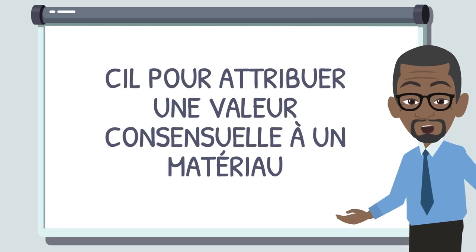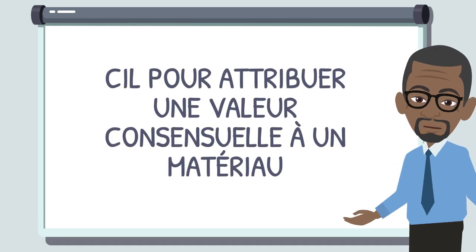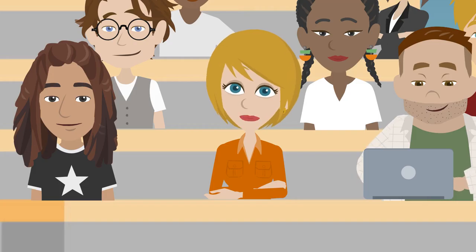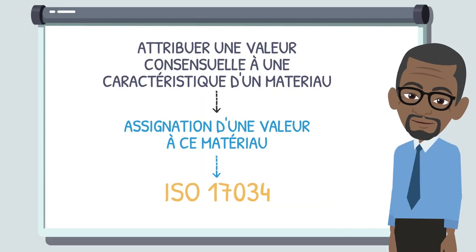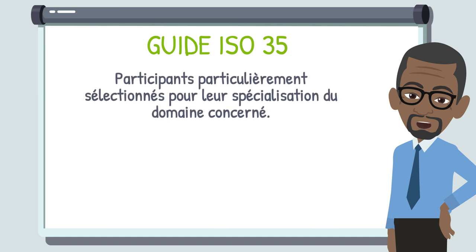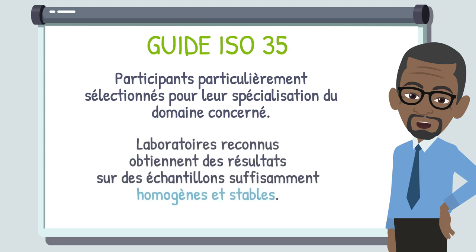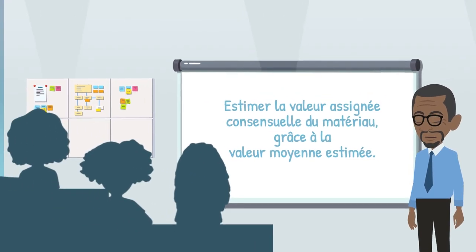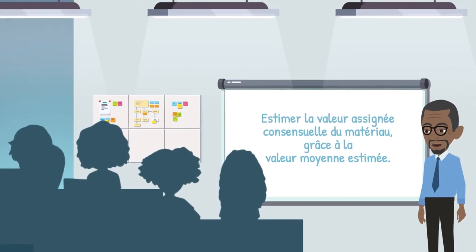If we wish to attribute a consensus value to a characteristic of a material, we will assign a value to this material. The associated standard is ISO 17034, General Requirements for the Competence of Reference Material Producers. This standard is backed up by a detailed ISO 35 guide. The participating laboratories are selected for their specialization in the relevant field. These laboratories obtain results on test items that are sufficiently homogenous and stable. The purpose is to estimate the material's consensus assigned value using the correctly estimated general mean.